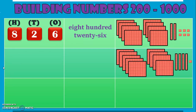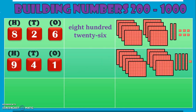Let us move on to the next number. How many blocks of 100s do we have here? 1, 2, 3, 4, 5, 6, 7, 8, 9 — so 9 hundreds. How many 10s? 1, 2, 3, 4 — 4 tens. And 1 one. How do we represent that number? 9 in the 100s place, 4 in the 10s place, and 1 in the 1s place — so 941.